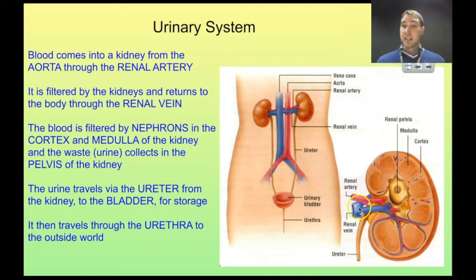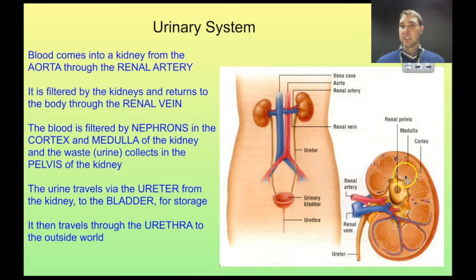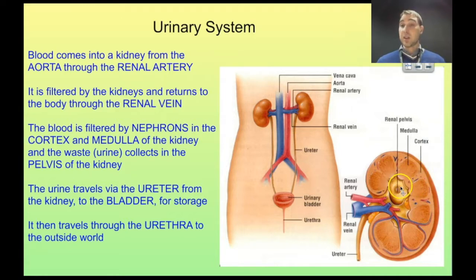In terms of the kidney structure itself, we can see the renal artery going in and the renal vein coming out. Other structures include the cortex, which is the outside of the kidney, and the medulla, which is the inside part of the kidney. Then there's the renal pelvis. Filtration happens in the cortex and medulla, and the urine produced passes into the pelvis. That urine then travels down the tube called the ureter into the bladder.